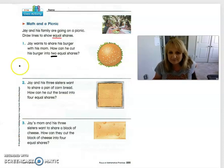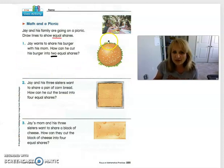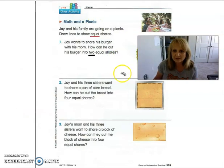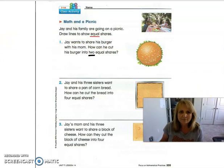Okay, are you back? All right, so we could cut the hamburger this way right down the middle, and mom and Jay would each get an equal share. Is there another way that we could cut that hamburger so that they each got an equal share? Yes, we could also cut it across the middle this way, and they would both have an equal share.